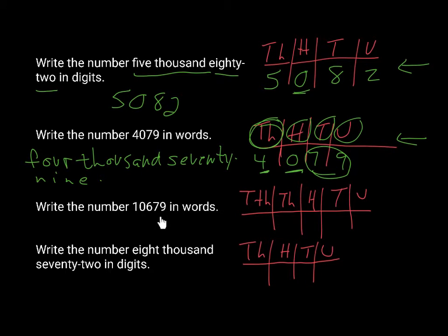One thing that you should remember to do is always start with the units, like write in the units and then the tens, hundreds, thousands and so on. So like this, so we've got nine, seven, six, and then 10,000.